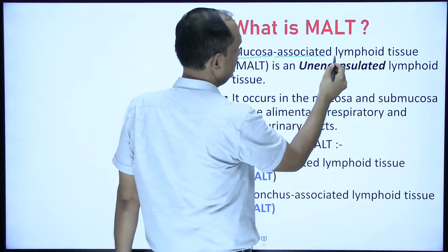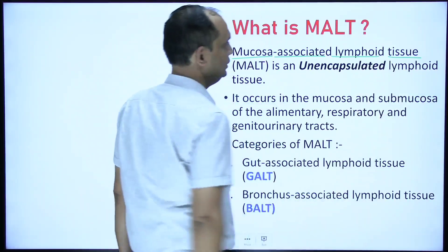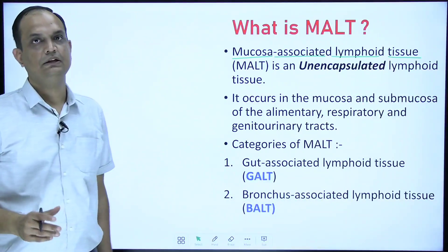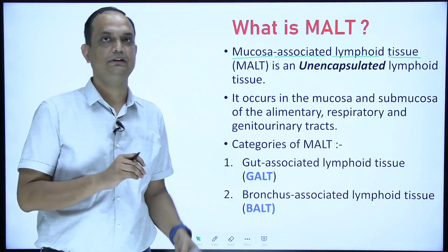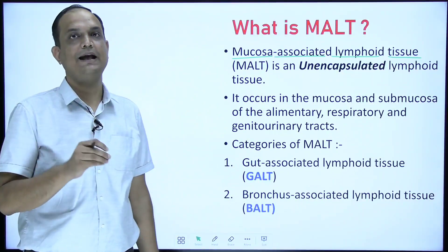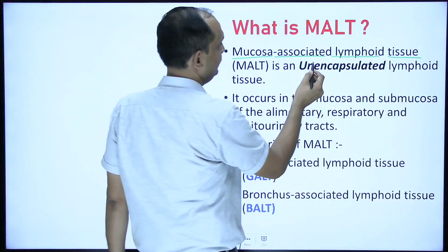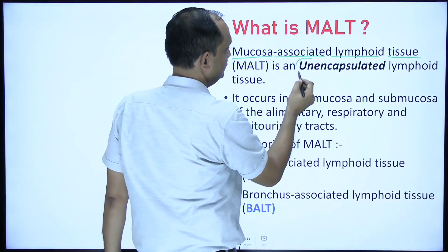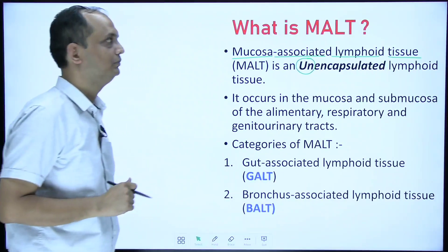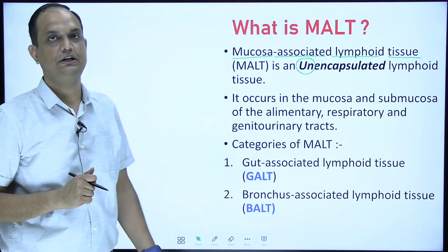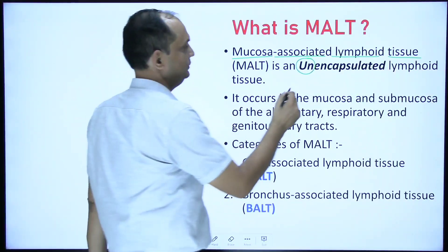Mucosa Associated Lymphoid Tissue. So whenever we are having the lymphatic system in the body, you are having some encapsulated collection of lymphoid tissue. The first and most important thing about the Mucosa Associated Lymphoid Tissue is that they are encapsulated.